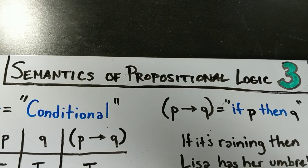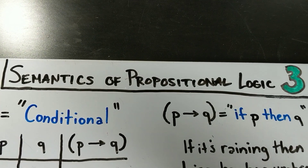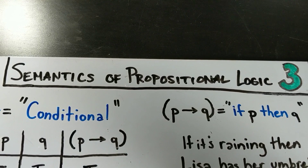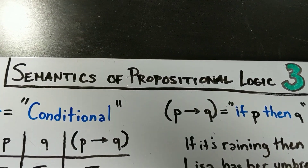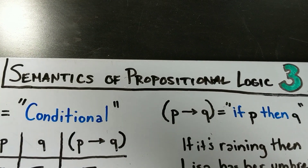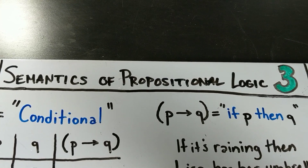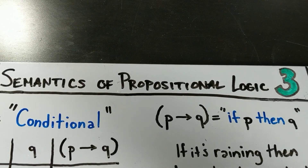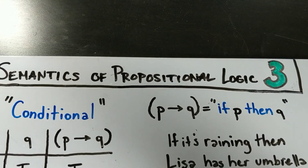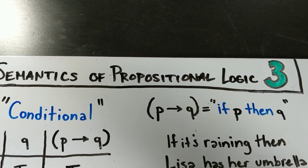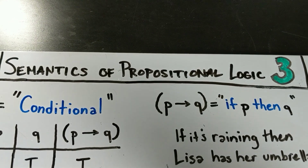Welcome to another mini-lesson about propositional logic. In this video, we'll finish up with the semantics of all of our different sorts of well-formed formulas in propositional logic by covering the conditional and the biconditional, which are the arrow symbols.